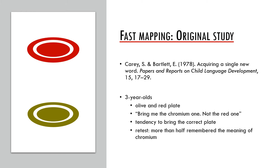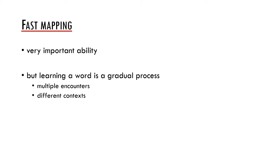We will return to fast mapping in a special presentation presenting the research by Laurie Markson and Paul Bloom in detail. The existence of fast mapping is a very important ability, and it seems children do not need that much input to learn a word. However, one can say that word learning is actually a gradual process — to master the meaning and correct use of a word, one needs multiple encounters with it, ideally in diverse contexts. It would be too strong to say that fast mapping is the main and sole principle for word learning.